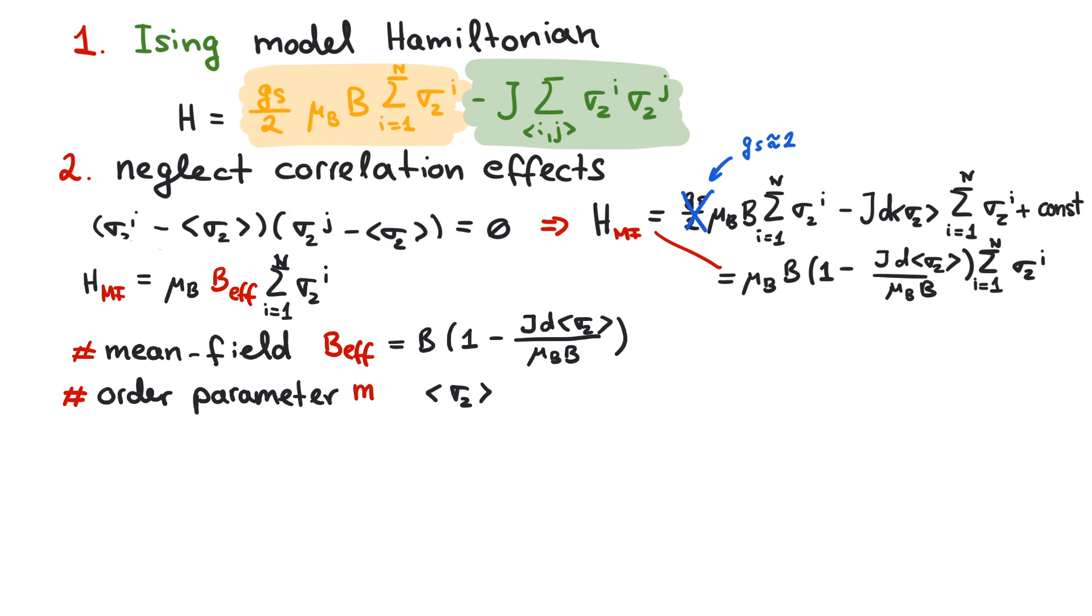Often one would introduce an order parameter M equal minus the thermal average of sigma z. That's because the magnetization is defined as the thermal expectation value of the sum of all local magnetic dipole moments. It is given by 1 over the partition function times the trace over all possible configurations.